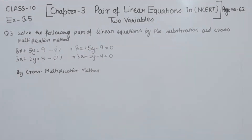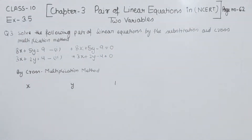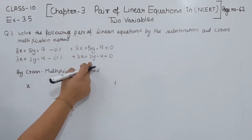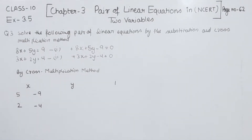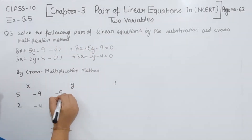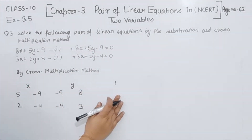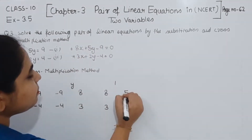We write x, y, and the constant term each equal to 1, setting up the cross multiplication format. For the x term, we consider the coefficients of y and the constants: 5 and 2 for y, and minus 9 and minus 4 for the constants. For the y term, we use minus 9, minus 4, and 8, 3. For the constant term, we use 8, 3 and 5, 2.